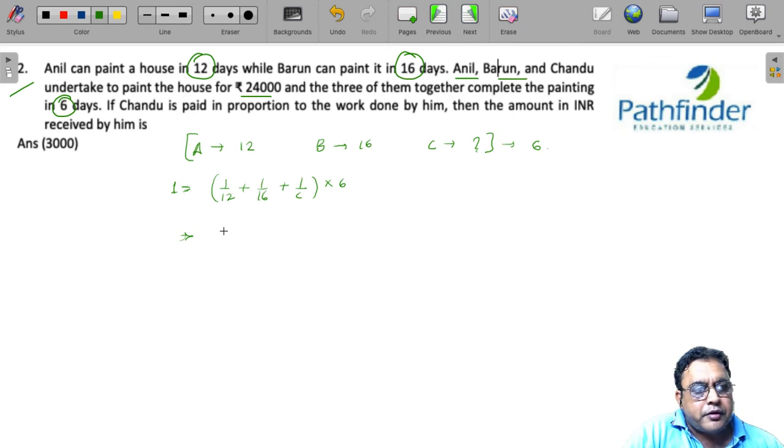So we have 1/6 minus 1/12 minus 1/16 is equal to 1/c. So 1/c must be equal to 16 minus 8 minus 6 upon 96, which is 2 upon 96, and which means C is equal to 48.